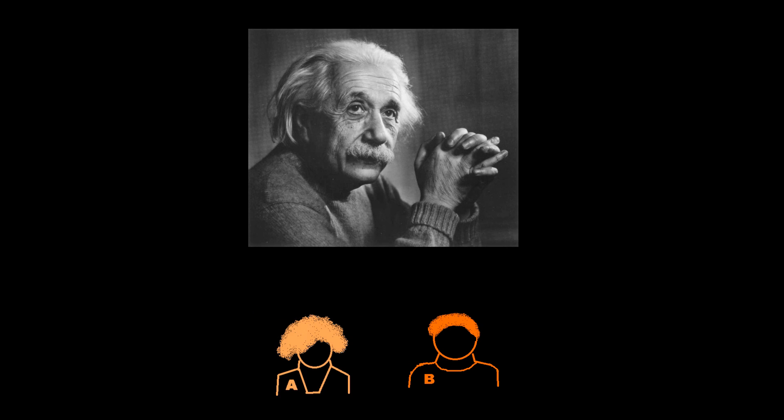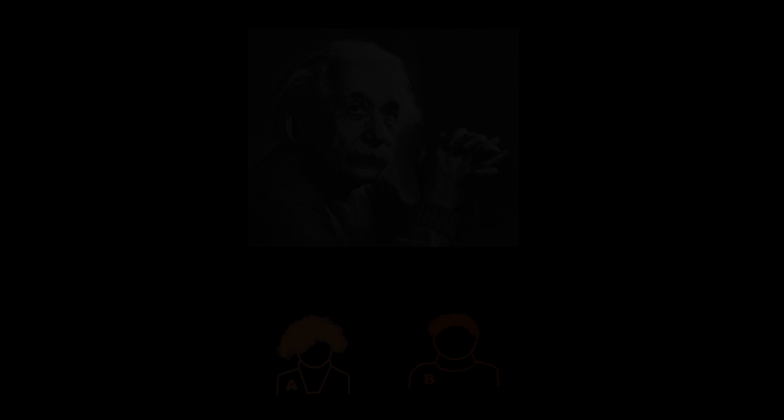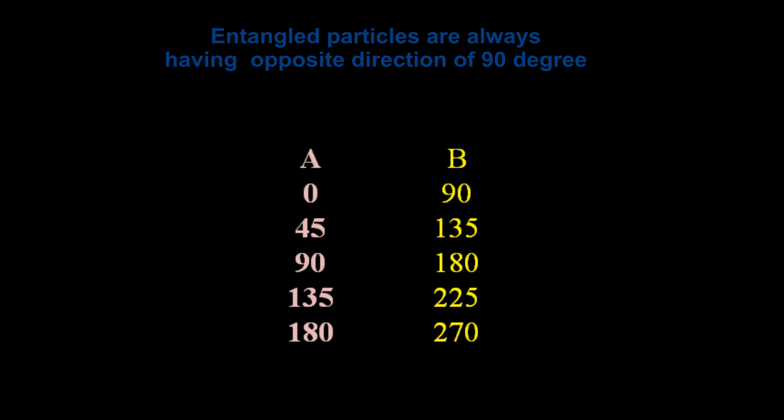As per Albert Einstein's opinion, this is not wonder. Because both were already in opposite directions when Alice created. So she could easily find Bob's photon state by simply looking at her photons. But that's not true. Assume both were already determined and opposite directions. That means if A is 0 degree, then B should be 90 degree. If A is 45, then B should be 135.